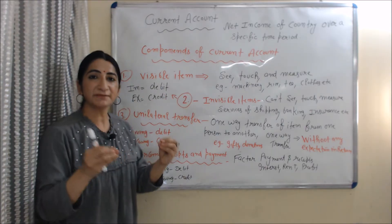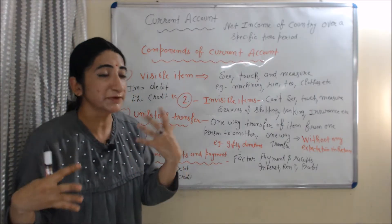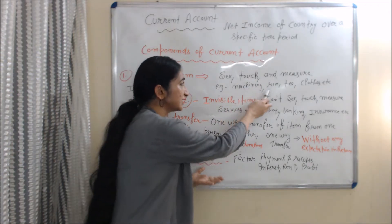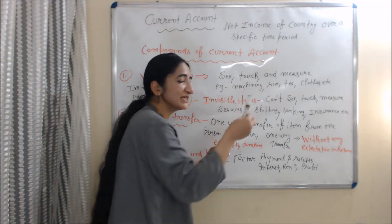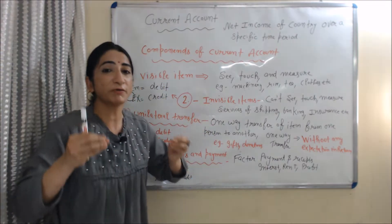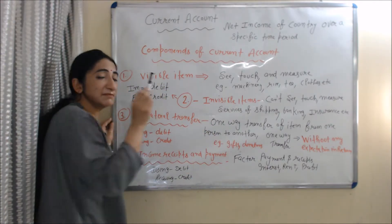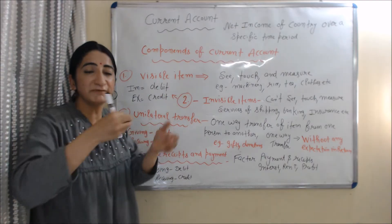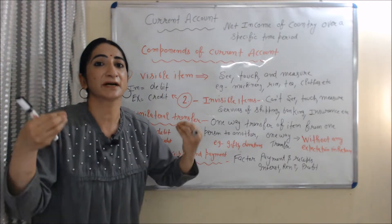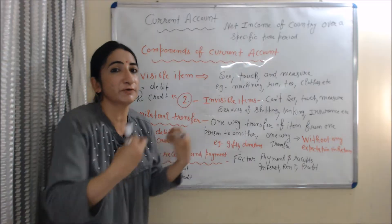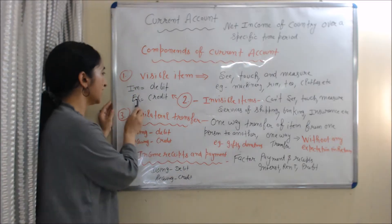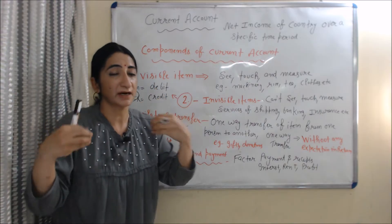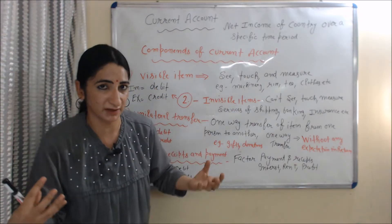Visible items are those items which we can see, touch and measure. For example, machinery, rice, tea and clothes. Import of visible items will be debited in the balance of payment account because money is going from our country. On the other hand, export of visible items will be credited in the balance of payment account because money is coming into our country.